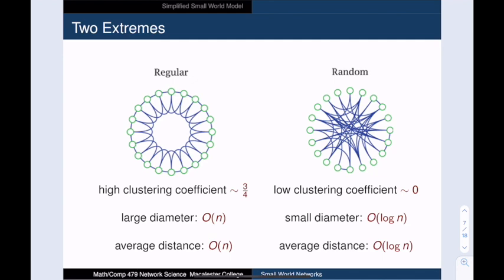The network on the left is what I'll call a ring world. The vertices are arranged in a circle, and each one is linked to its C nearest neighbors. This ring world has very high clustering. In fact, we can show that almost three quarters of the connected triples are joined into a triangle. However, this graph has a very large diameter. It is not hard to show that the longest distance in this path is actually 2n over C.